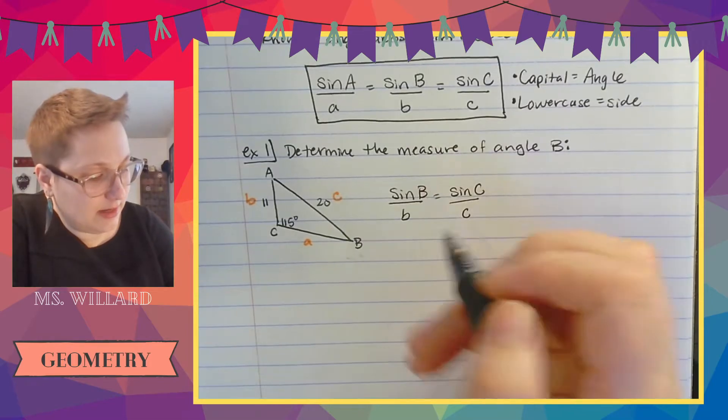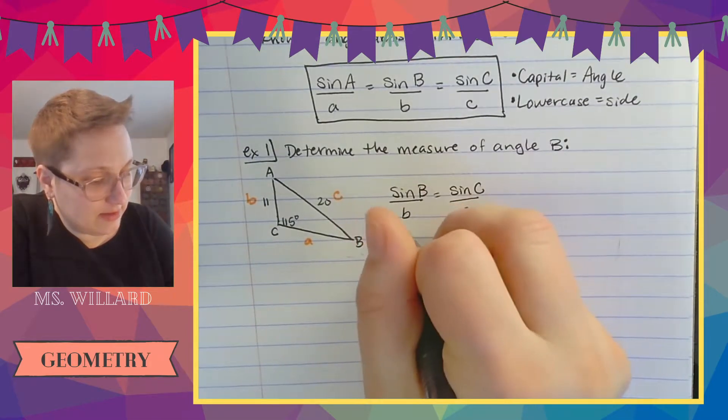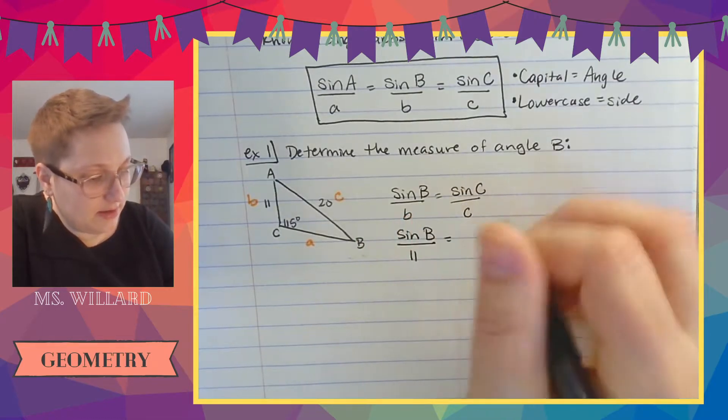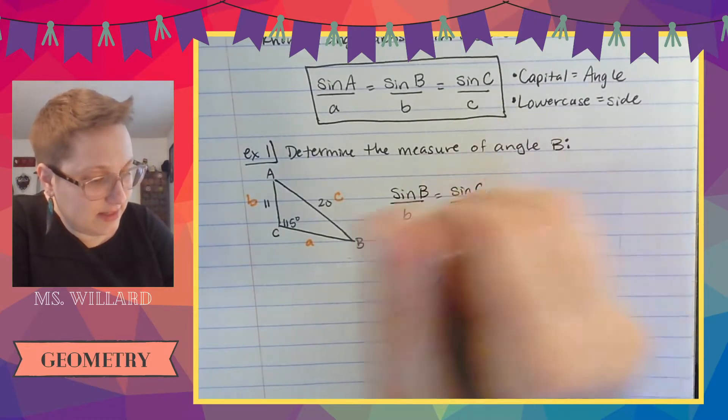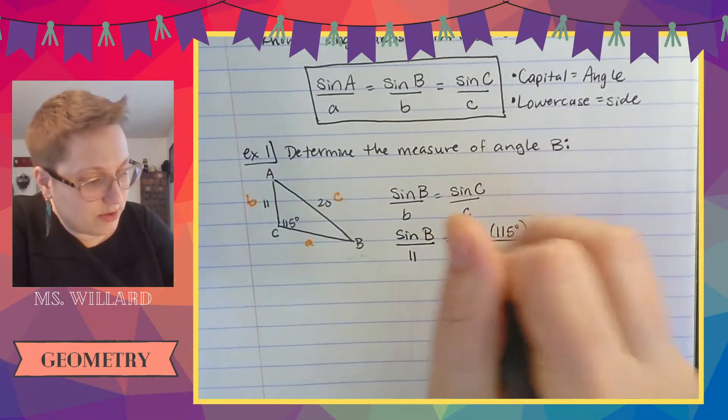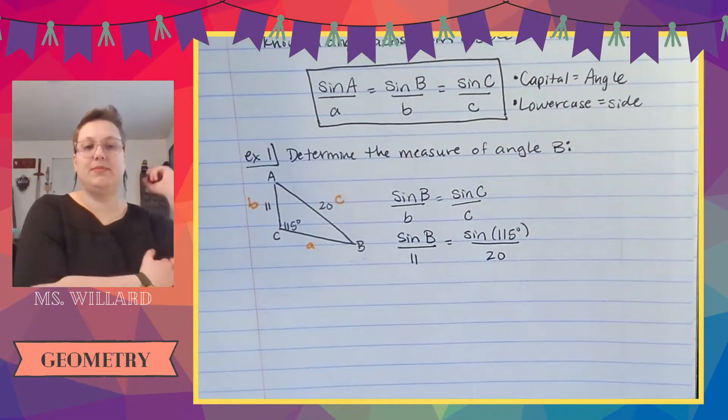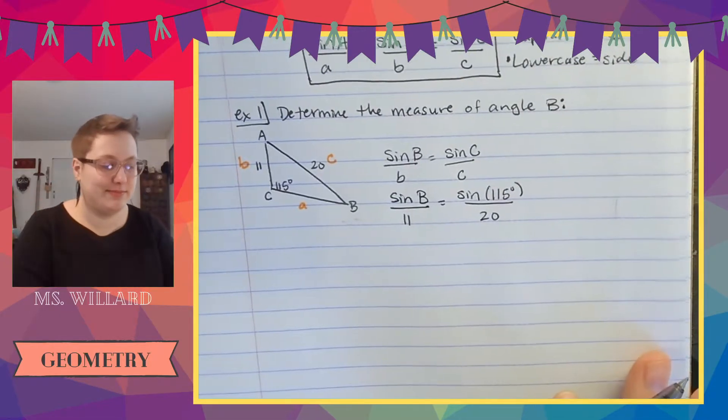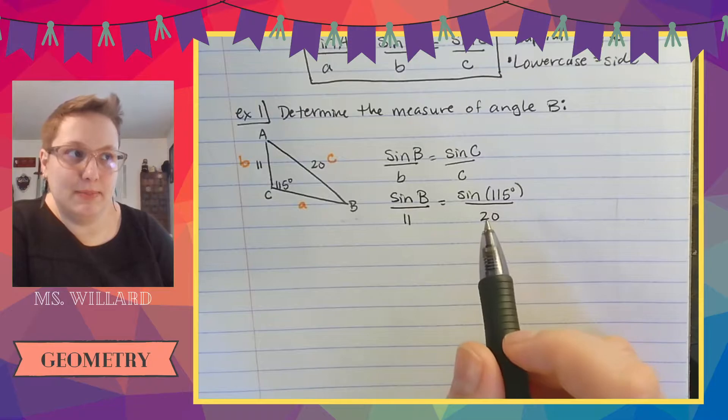So the law of sines I'm going to use is that sine of b over b equals sine of c over c. And I already know three of those things. So sine of b over a little b which is 11 equals sine of c which is 115 over 20 which is little c. And then what I normally do is I just cross multiply and divide.